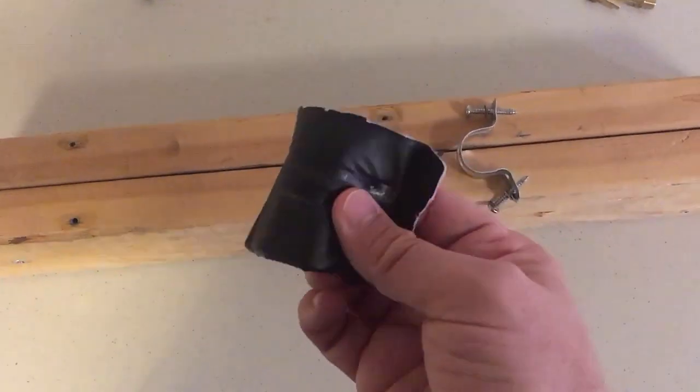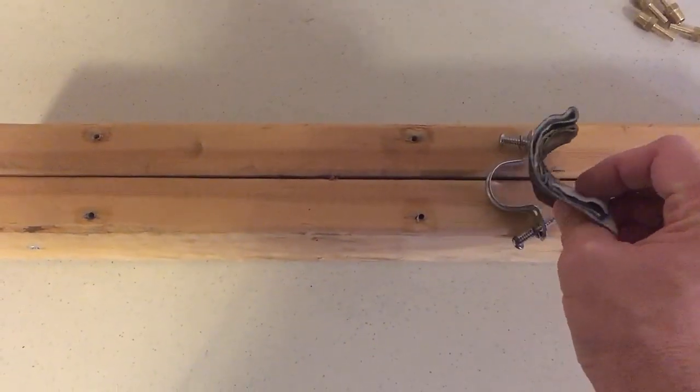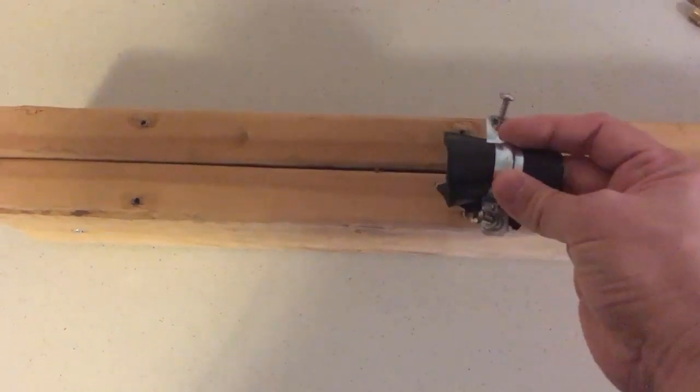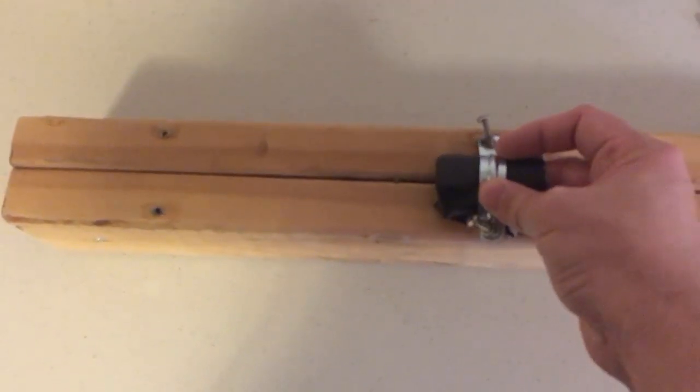Then I just grabbed some scrap vinyl that I had and stuffed it inside there so that when I clamped it down it wouldn't damage the cot in case I want to sell it sometime. And then just screwed it in there.